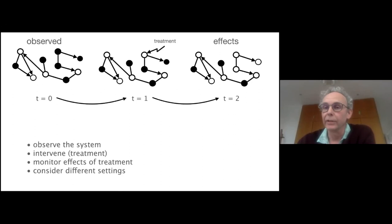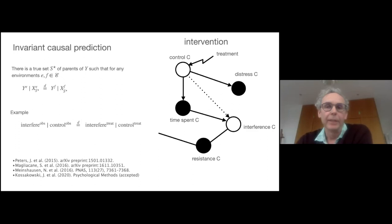How do all these treatments together provide us information on the relations between these variables for obsessive compulsive disorder? What we've been using is invariant causal prediction. Basically the idea is seen here on the right.